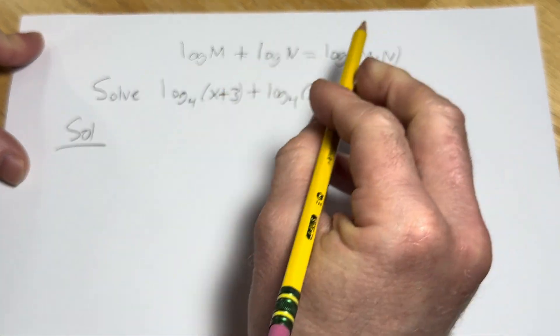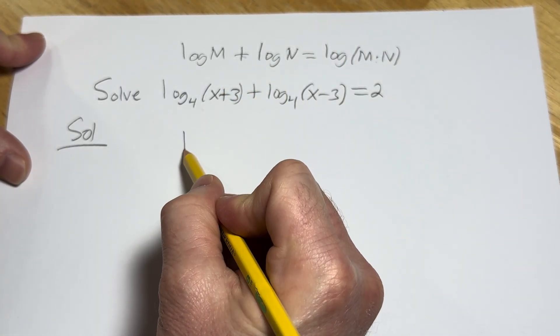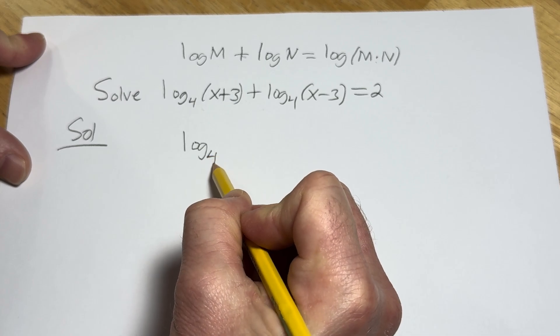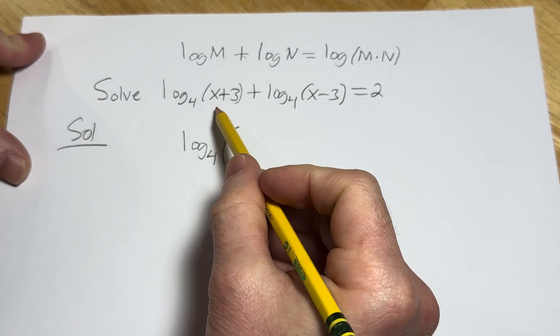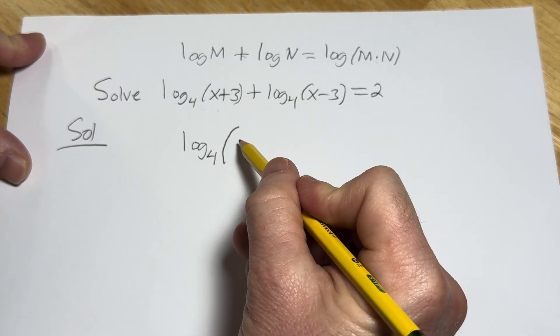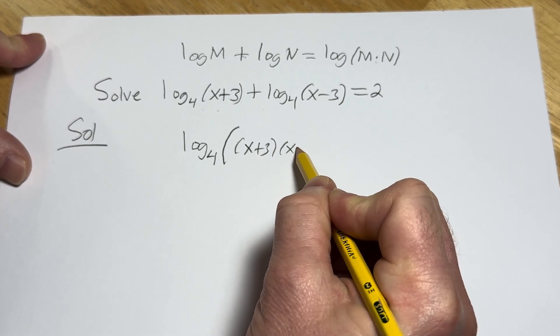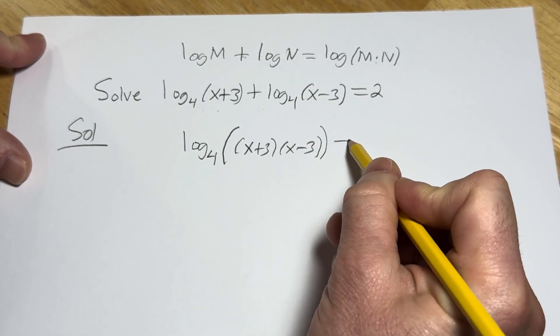Okay, so let's go ahead and apply that here to this problem. So this will become log base 4 of, and this is kind of cool, x plus 3 times x minus 3. That's the difference of squares. And that's equal to 2.